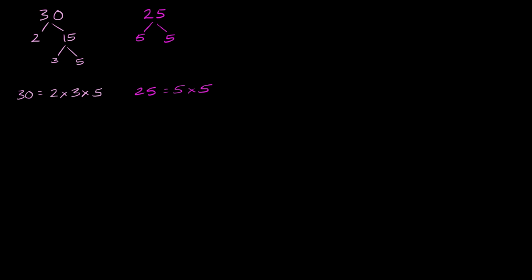Now to find the least common multiple, the LCM of 30 and 25 is going to have a prime factorization that is a superset of both of these, or has all of these numbers in them as many times as we have in any one of these. It has to be divisible by 30, so it's going to need a 2 times a 3 times a 5. This is what makes it divisible by 30.